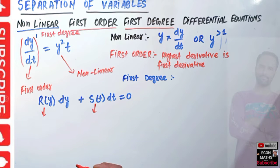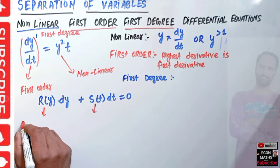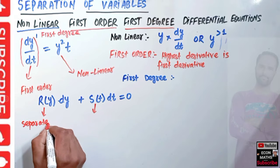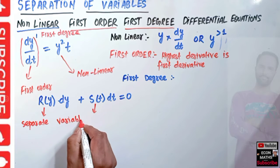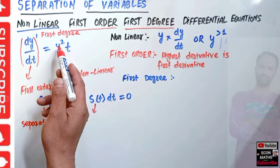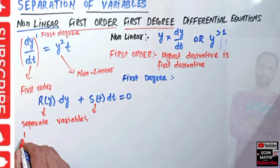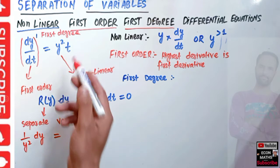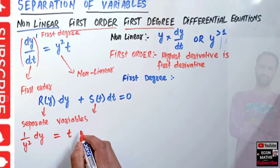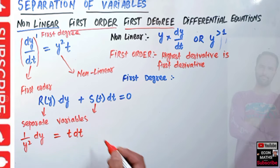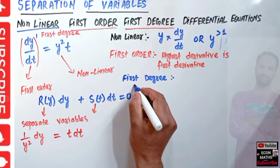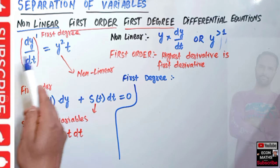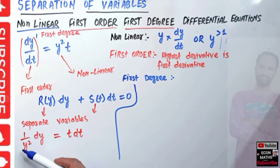Given the differential equation dy/dt = y²t, we can separate the variables. First we separate variables. Transposing y² to the left side gives us (1/y²)dy = t·dt. We can see that R is a function of y alone and S is a function of t alone.